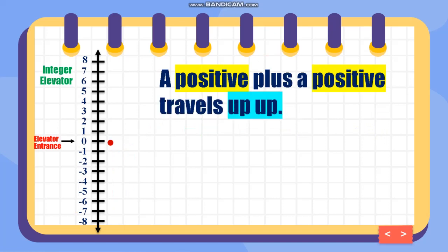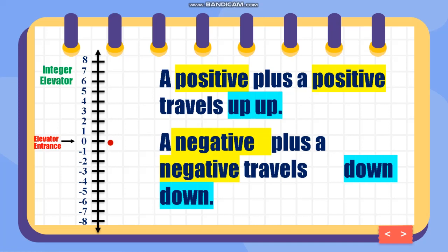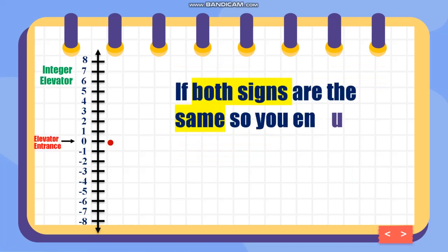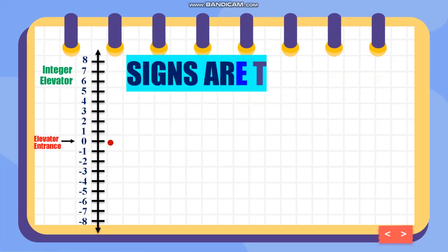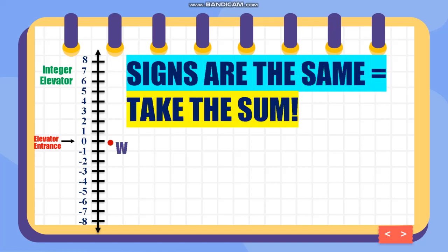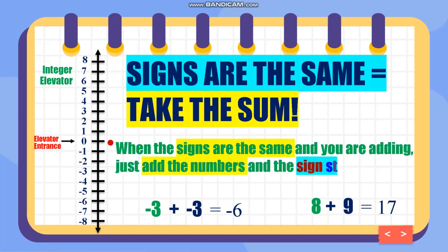A positive plus a positive travels up and up, but a negative plus a negative travels down and down. When the signs are the same, you need to add the numbers and the sign stays the same. For example, both negative: 3 plus 3 is 6, so the answer is negative 6. Both positive: 8 plus 9 is 17, so the answer is positive 17.